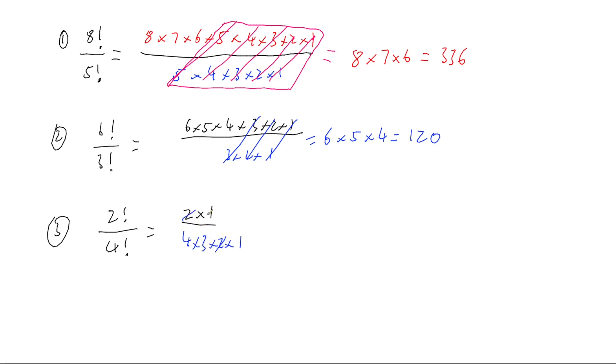So the 2 is going to cancel with the 2, the 1 is going to cancel with the 1. So we're going to be left with a 1 on top because 2 divided by 2 is 1, and 1 divided by 1 is 1, and 1 times 1 is 1. And on the bottom we've got 4 times 3, which is 12. So our answer is 1 over 12.